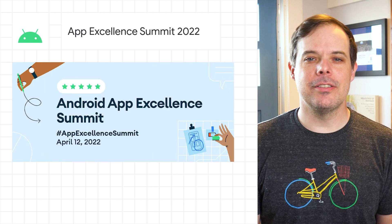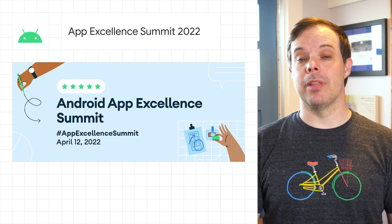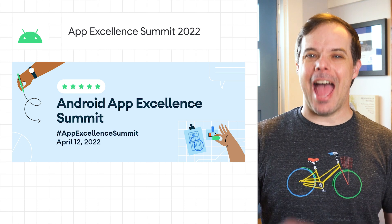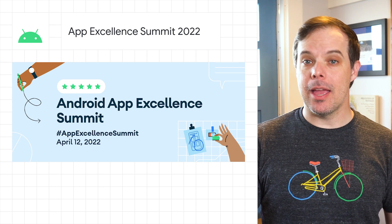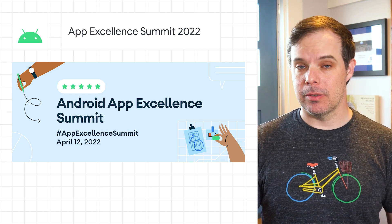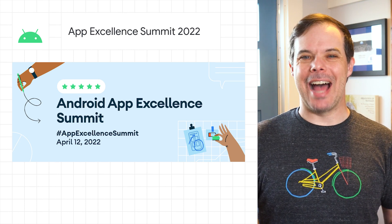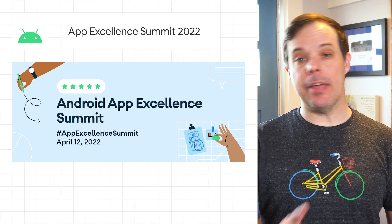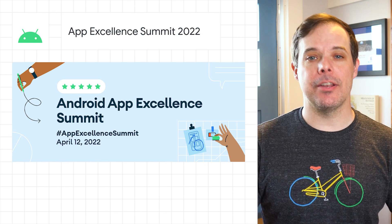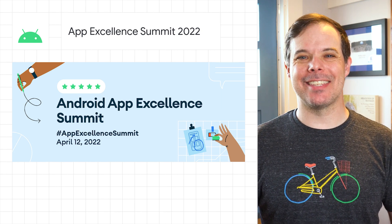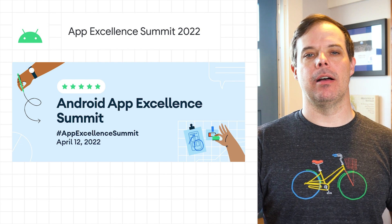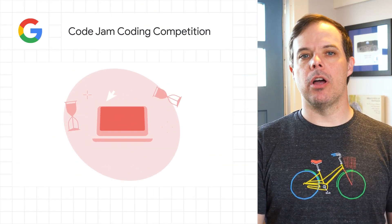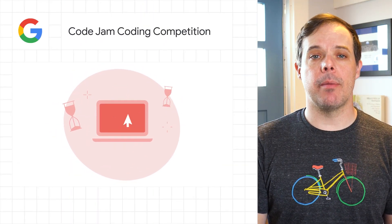It turns out that 54% of users who left a one-star review in the Play Store mention app stability and bugs. To help you understand how to build high-quality Android apps and scale your business, we're hosting an Android App Excellence Summit on April 12.